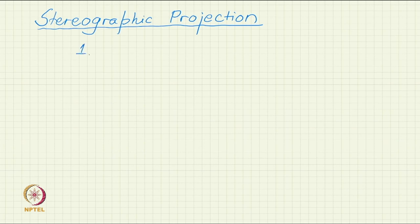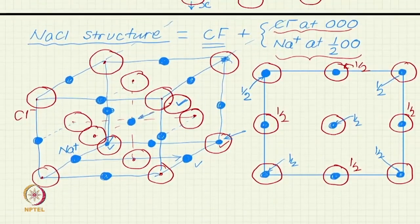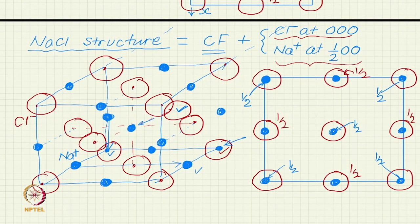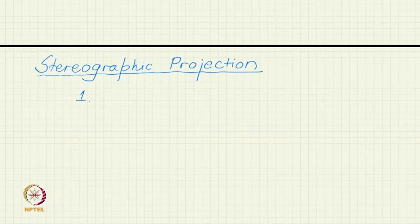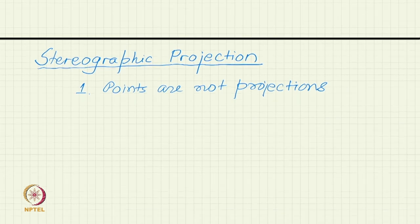First of all, one distinction between orthographic projection and stereographic projection: in stereographic projection you do not project points. In orthographic projection I was asking what is the projection of a given point, but now I do not have an answer to that when I am talking of stereographic projection. So, points are not projected.